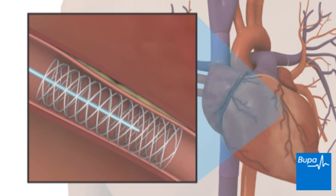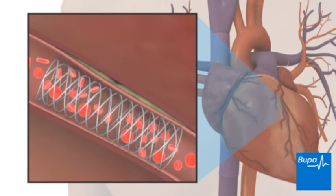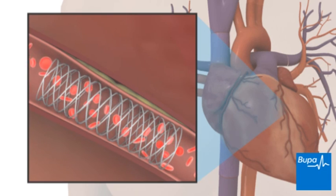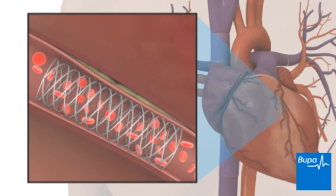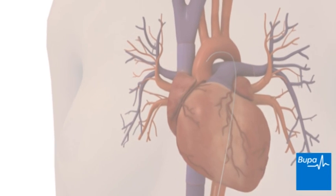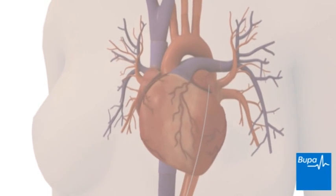Sometimes the stent is coated with medicines to reduce the risk of your artery narrowing again. Here we show the blood flowing through the artery with the stent in place. The catheter is then removed.